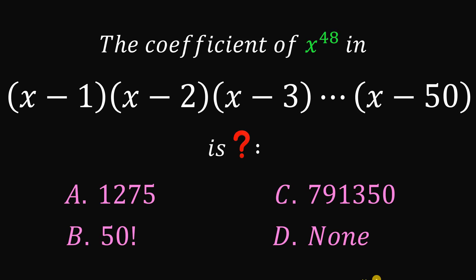Can you solve this math challenge? Here's the question. The coefficient of x raised to the 48th power in this product, x minus 1 times x minus 2 times x minus 3 all the way down to x minus 50 is blank.